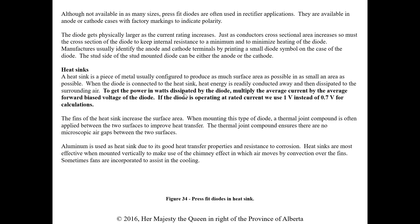Heat sinks basically pull heat away from the diode — heat energy is conducted away and dissipated to the surrounding air. To find the power in watts dissipated by the diode, multiply average current by average forward bias voltage using P = I × E. If the diode is operating at rated current, use 1 volt instead of 0.7 volts for the calculation. It's the same voltage needed to overcome the barrier potential, but for wattage calculations use 1 volt.